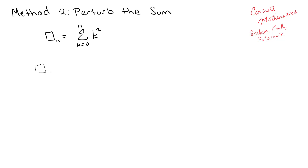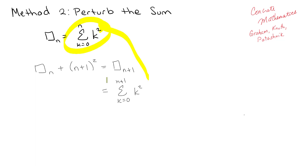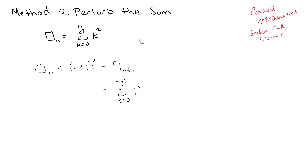So if we start out with something like square sub n plus (n+1)², then what that gets you is square sub n+1. Now we know by definition that square sub n+1 would also be the same thing as the sum where k goes from 0 to n+1 of k². So we're just taking the same definition and applying it to the n+1 term.